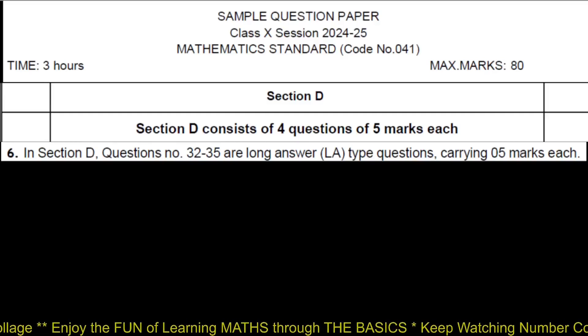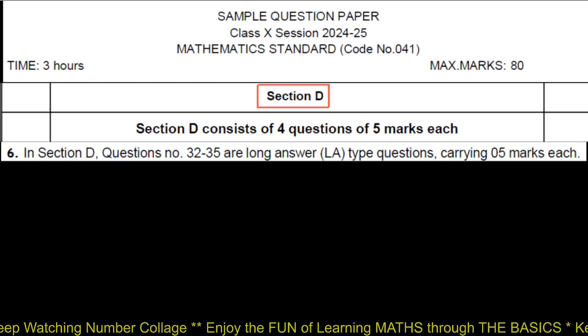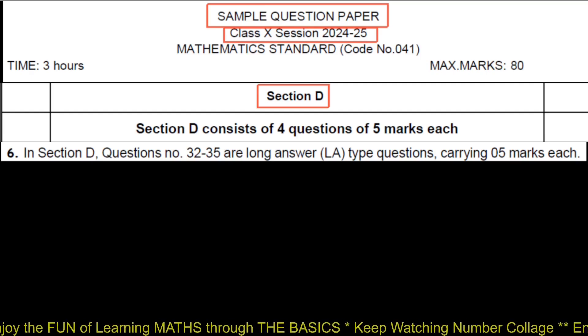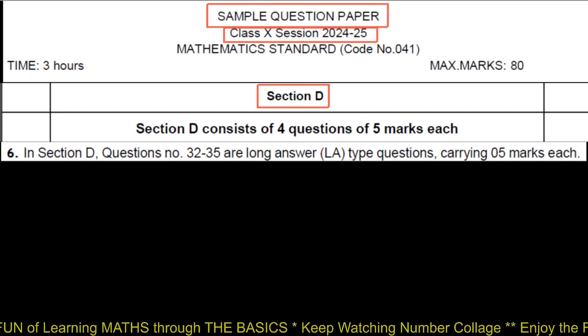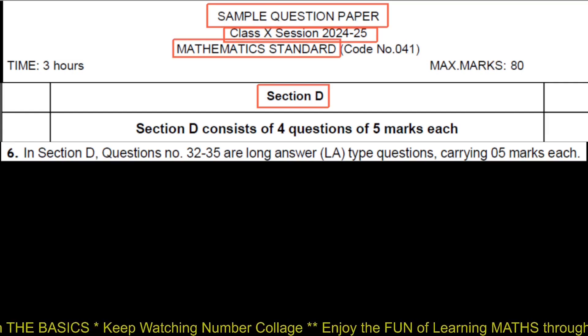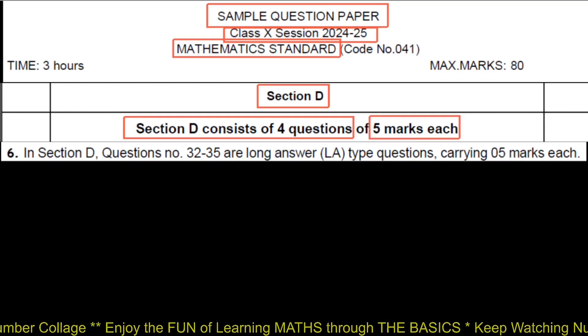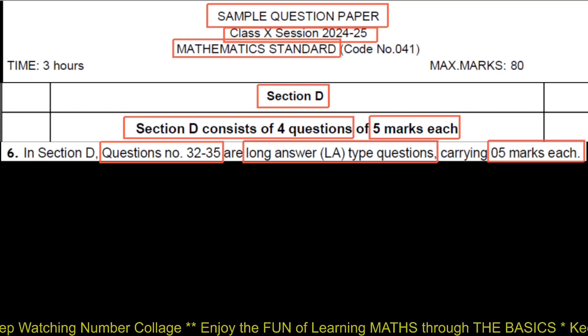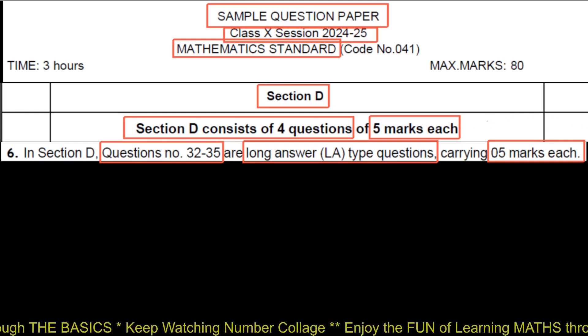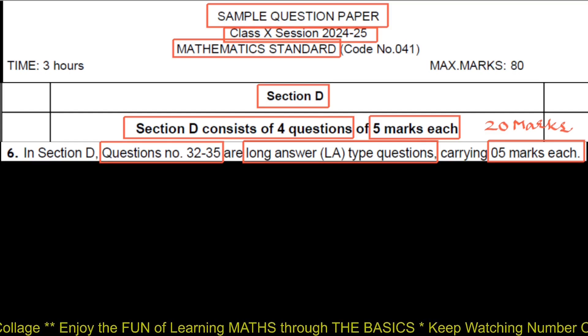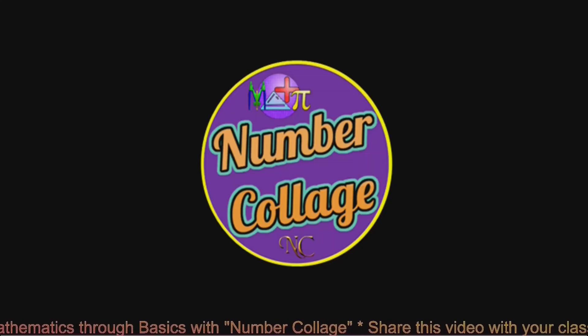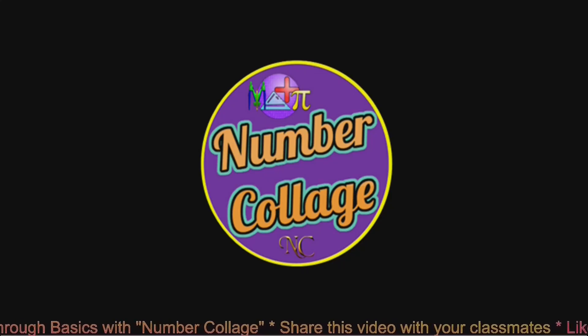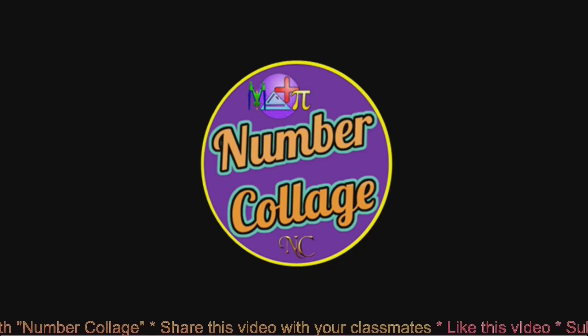In this video, we are going to discuss Section D of the Sample Question Paper of Class 10 for the year 2024-25, released by CBSE Board Mathematics Standard. Section D consists of 4 questions of 5 marks each. Q32 to Q35 are long answer type questions carrying 5 marks each, that will be 20 marks in all if solved correctly. We are going to discuss concepts through basic mathematical ideas.